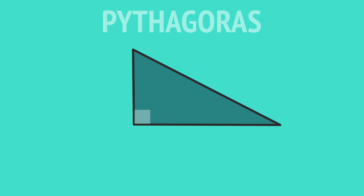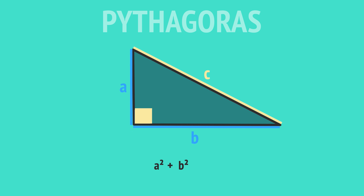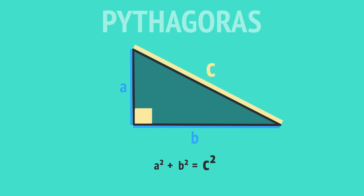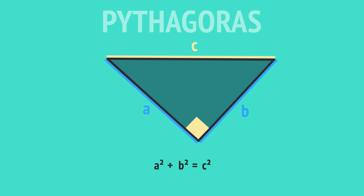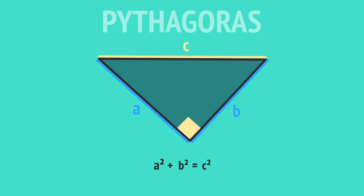The theorem of Pythagoras gives the relationship between the sides of a right-angled triangle. We identify the longest side, or hypotenuse, across from the right angle as side c, and then label the shorter sides a and b. If we add the squares of the shorter sides, we get the longest side squared, or as a formula, a squared plus b squared equals c squared. Any right-angled triangle has this relationship between the shorter sides and the longest side.